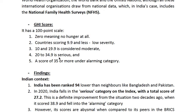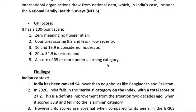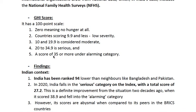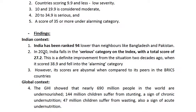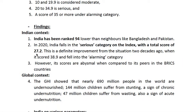These parameters are important from the prelims point of view. The score scale goes from zero, meaning no hunger at all, up through categories: a score of 9.9 and below is low severity, then moderate, serious, and alarming. India falls under the serious category, between 20 and 34.9 points. India has been ranked 94th, lower than countries like Bangladesh and Pakistan, with a score of 27.2.